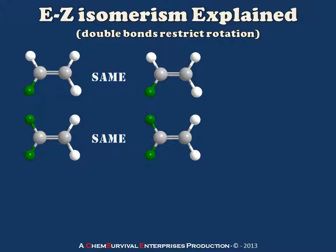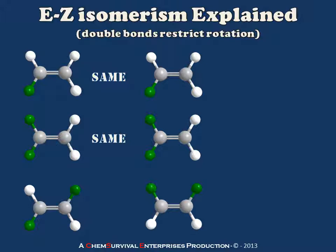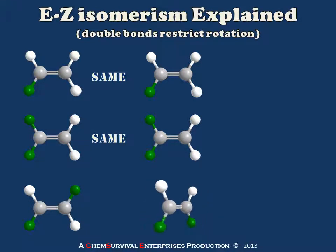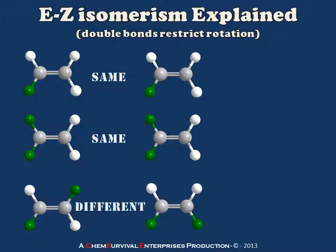Now the simplest situation in which we do have E-Z isomerism would be one like we're showing below here. I still have two green and two white substituents, but the difference is that I've put them on alternating carbons. Nothing I do short of actually breaking that pi bond and rotating the carbon-carbon bond can cause them to be superimposed — they're clearly not the same molecule. No matter how I attempt to rotate my new construct, I can't get it to look exactly the same as the molecule on the left, so these are clearly different from one another and therefore need different names because they will have different chemistry.